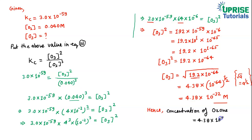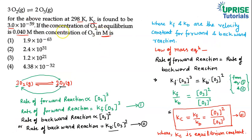Hence, the concentration of ozone = 4.38 × 10⁻³² molar. This is our answer. The question asked for the concentration of O₃ in molar, and the value is 4.38 × 10⁻³² molar, so option 4 is the correct answer. I hope this is completely clear. Thank you for watching this video.